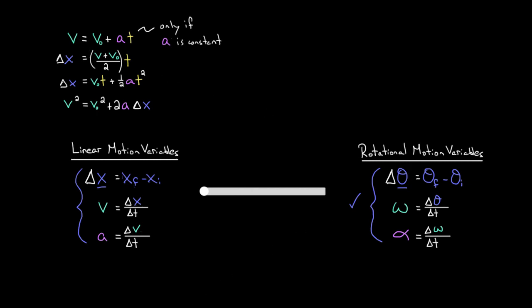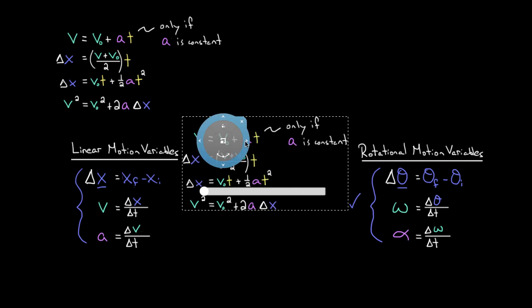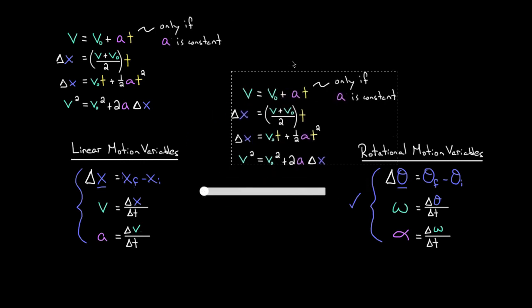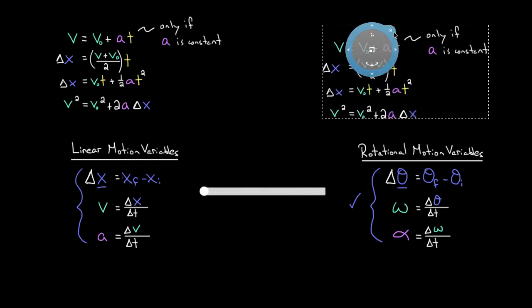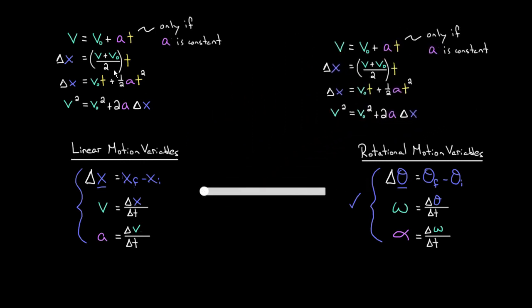Now if you wanted rotational kinematic formulas, you could go through the same derivation using areas under curves. But since we know the relationship between all the rotational motion variables is the same as the relationship between the linear motion variables, we can make rotational kinematic formulas simply by replacing all the linear variables with their rotational counterparts.